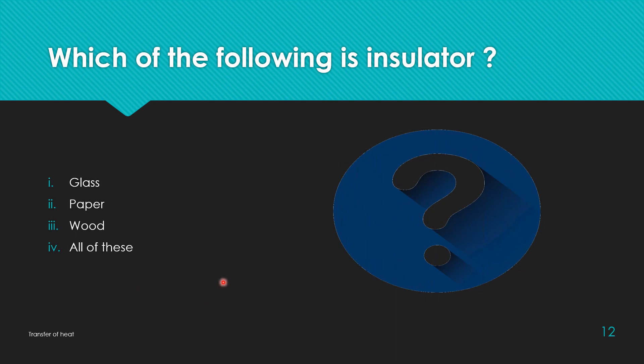Second question is, which of the following is insulator? First one is glass, second option is paper, next one is wood, and last option is all of these. So, student answer is all of these. Because glass, paper, wood, all are insulators. They can't conduct heat easily.